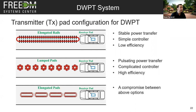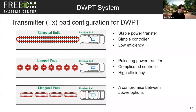The initial topologies for DWPT used elongated rails, anywhere from 10 to 25 meters, providing stable power transfer. However, because a very long portion of road was energized, efficiency was low and there were safety issues. The other option is lumped pads, similar to stationary charging pads, which offer high efficiency but require many inverters, increasing cost and control complexity, and producing pulsating power. In this project, we used a compromise: elongated pads of one to three meters.